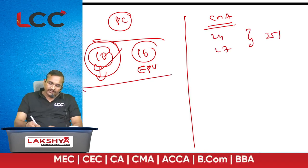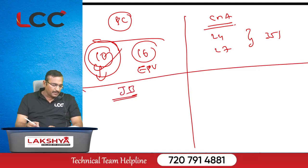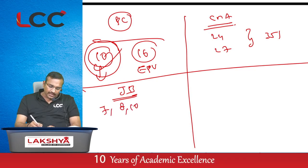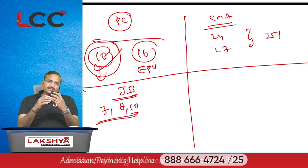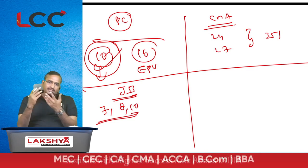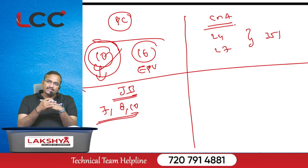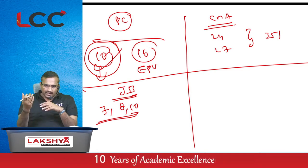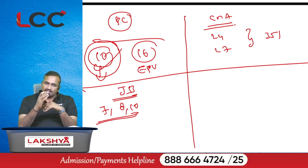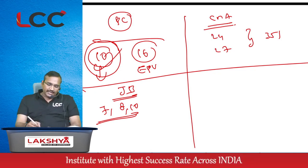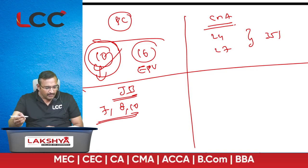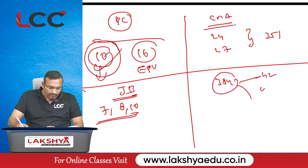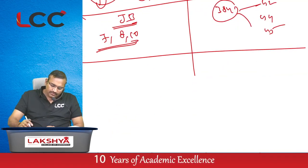The next chapter is joint products and byproducts. From lecture material, question number 7, 8, and 10. The main concept is how to apportion the joint cost among the joint products. There are eight methods, but the most important are the last two: the reverse cost method, the percentage of profits method, and the net realizable value (NRV) method. From CMA material, page number 384: questions 42, 44, and 45.